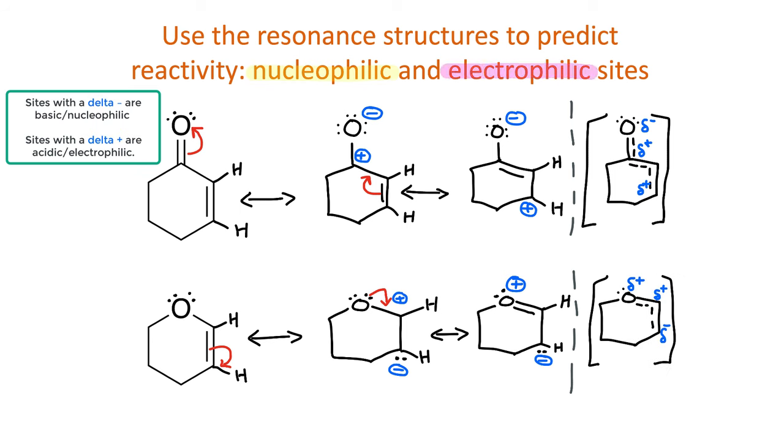The partial charges in the hybrid tell us which sites are most nucleophilic or basic, and which are most electrophilic.